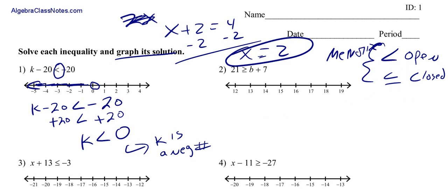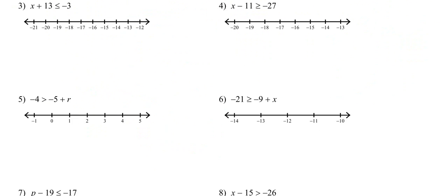So let's look at another example. Here we got, let's look at three. So we know x plus 13 is less than or equal to negative 3. So we've got less than or equal to. So it's going to be a closed dot. Remember that. So now we're just going to solve for x.